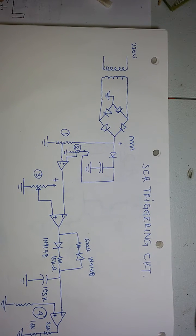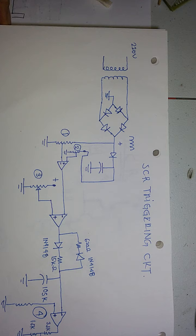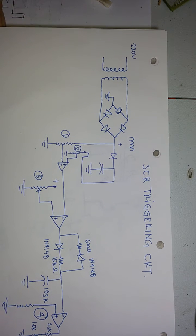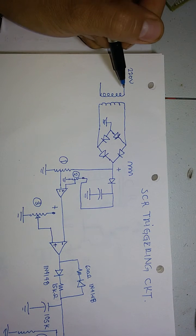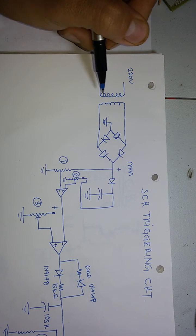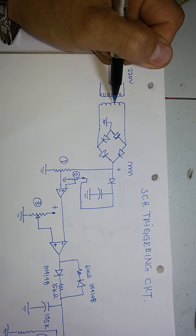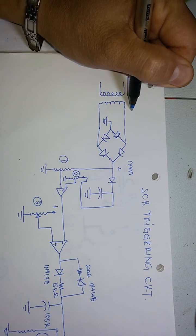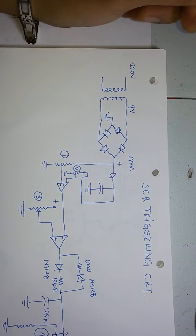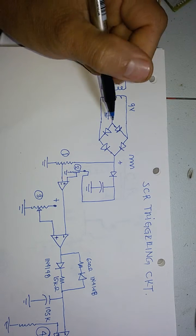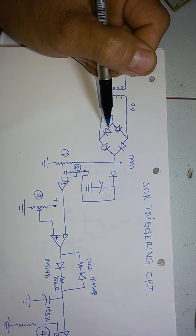We will continue. This is the schematic of our ACR triggering circuit. We have here a transformer — I'm using a 220 volts transformer with a 9 volts output. We have our bridge rectifier here.